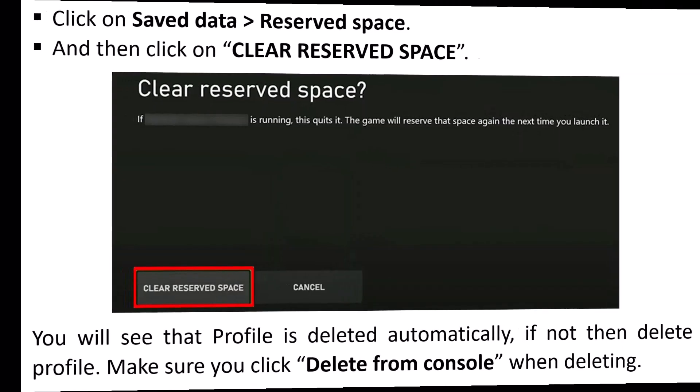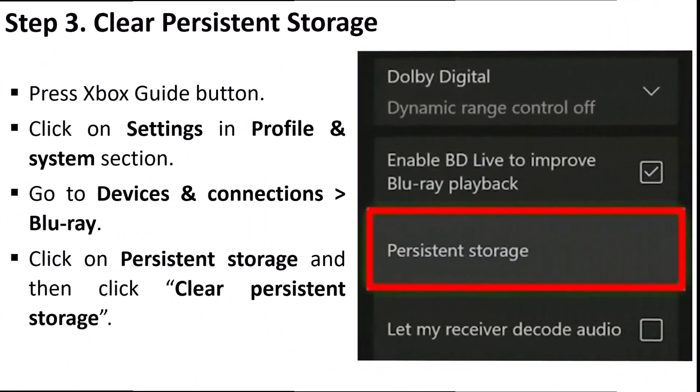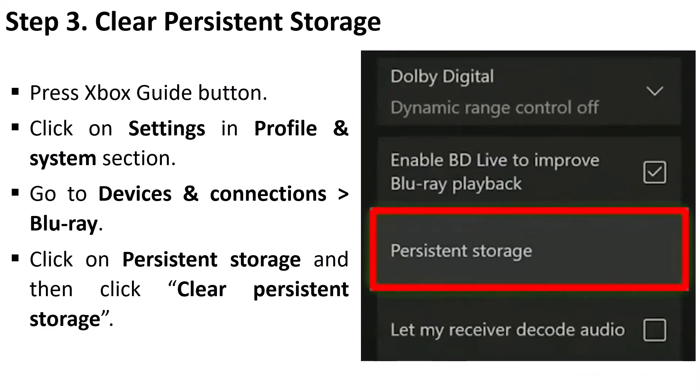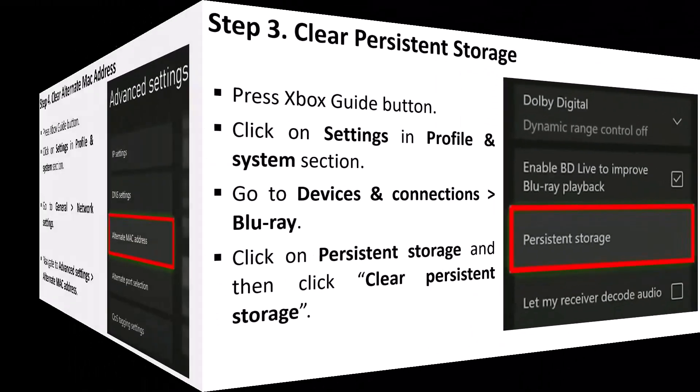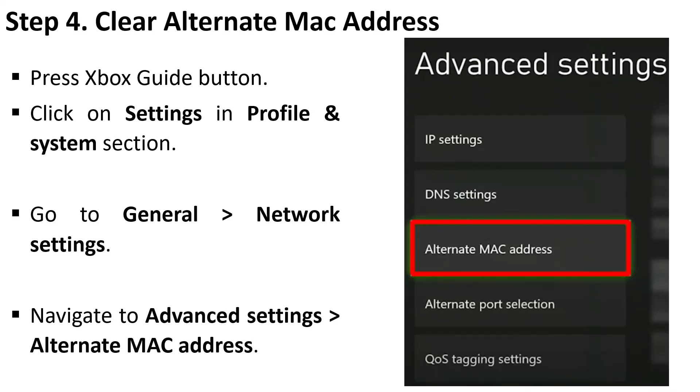Make sure you click Delete from Console when deleting. Step three is to clear persistent storage. Press the Xbox guide button, click on Settings in the Profile and System section, go to Devices and Connections, Blu-ray, click on Persistent Storage, and then click Clear Persistent Storage.